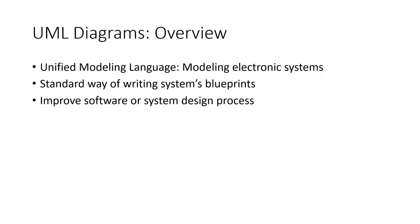So what is UML? UML is Unified Modeling Language. It's used to model electronic systems as a way to show its blueprint so that we can implement or plan out possible software or systems for our organization. It actually improves software and system design processes, making them more efficient and discovering risks and issues that may occur before implementing.